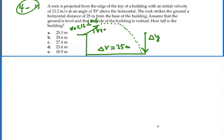So this is truly a two-dimensional problem. We finally have a good two-dimensional problem. We have our initial velocity that's going up at an angle, 53 degrees, 12.2 meters per second. We need to break this up into x and y components.